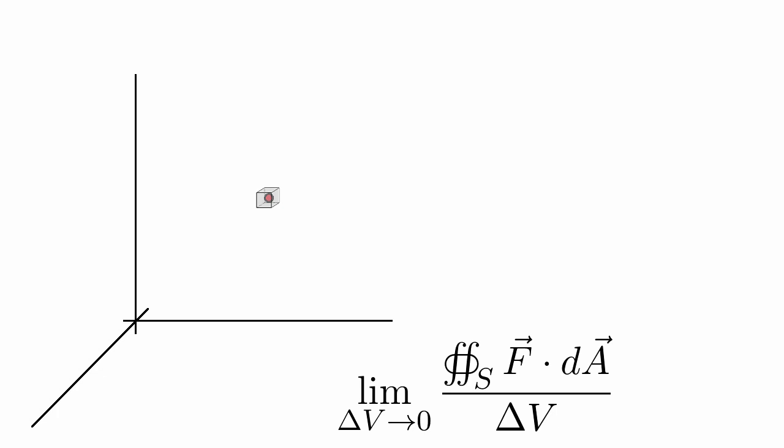This quantity here that we have, the average flux about a certain point, is something called the divergence. Divergence just tells you how much flux would be going through a volume surrounding a particular point. How much of the field is going out of or going into a particular point.